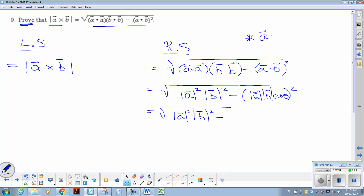Again, if you look back in your note, you would remember that that is the formula. So what that allows me to do now is to distribute that square in. So I have the magnitude of A squared, magnitude of B squared, cos squared theta.